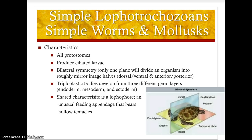They exhibit bilateral symmetry, which means there is only one plane that will divide the organism into roughly mirror image halves. So you get that dorsal-ventral surface — the dorsal would be the back, the ventral would be the belly side — and then anterior towards the head and posterior being towards the tail region.